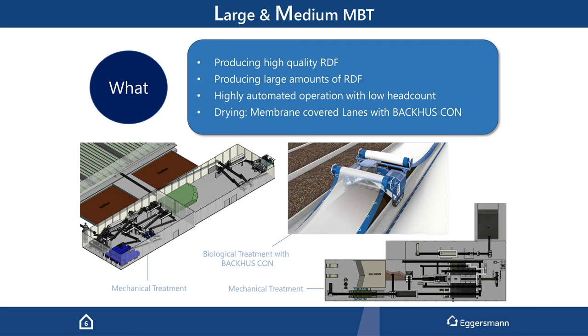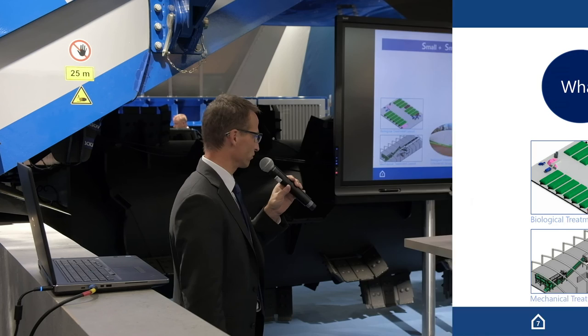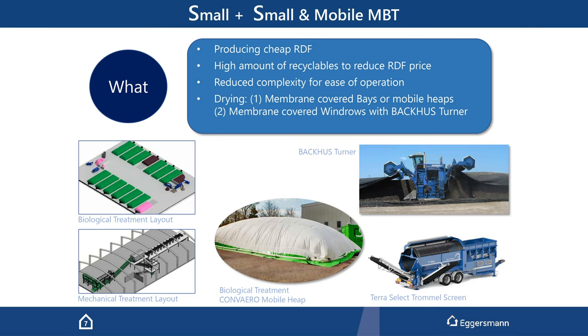For the smaller sites, that degree of automation is not possible — it's not affordable. So here we talk about cheaper RDF, of course a bit lower in quality, but affordable, so that even small facilities are sustainable. The main difference is that we take out a fair amount of recyclables to sell, because it makes the RDF cheaper if you can substitute the operation cost by selling recyclables. Drying here can be done in a mobile system or in simple covered windrows.